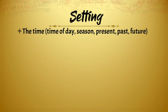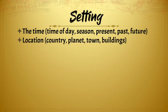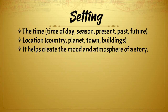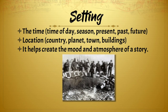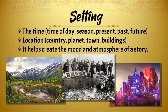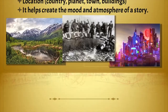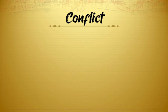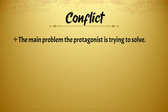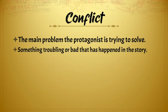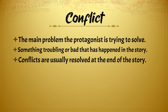The setting is the time — time of day, season, present, past, or future — and the location: the country, planet, town, or buildings. It helps create the mood and atmosphere of the story. Conflict is the main problem the protagonist is trying to solve, something troubling or bad that has happened in the story. Conflicts are usually resolved at the end of the story.